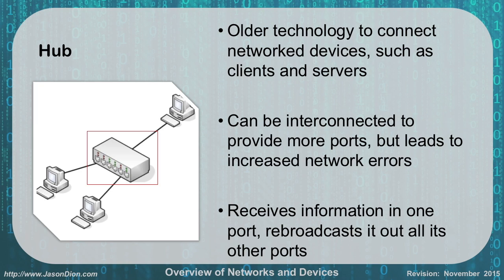The problem with hubs is they receive information on one port and rebroadcast it out all the other ports. So if you have a 6-port hub with three machines, everything one machine sends can be heard by all others — that's a security issue. Also, on a 4-port hub running at 100 megabits per second with four devices sharing bandwidth, you only get 25 megabits per port. With a switch, that doesn't happen because it uses dedicated resources.